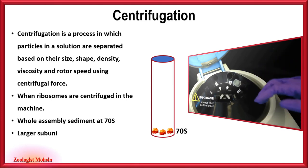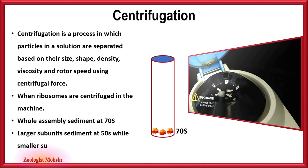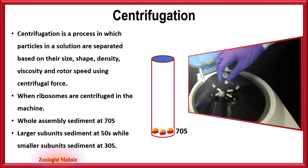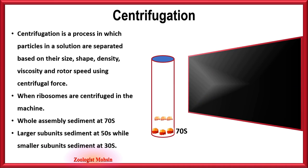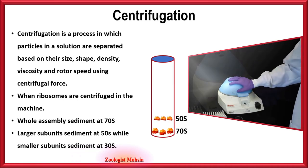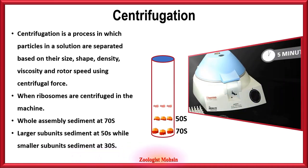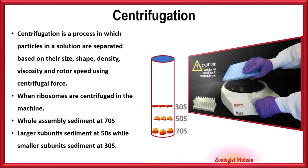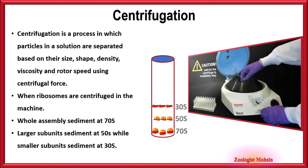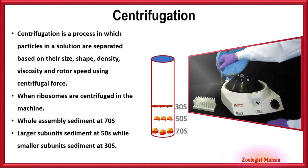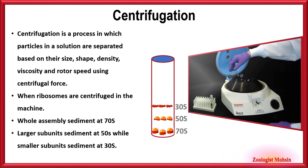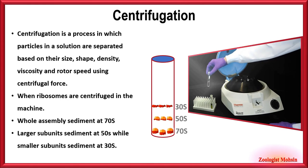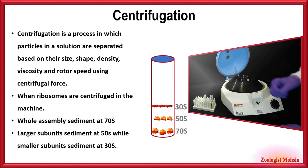Similarly, when separate subunits are centrifuged, they settle or sediment at different levels in the tube. The larger subunits settle at 50S, while the smaller ones settle at 30S. This is because the whole assembly has a larger size, shape, and is heavier — that's why it settles at the bottom — while the smaller units settle based on their respective sizes, shapes, and weights.